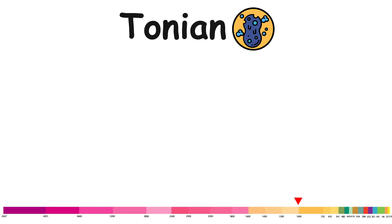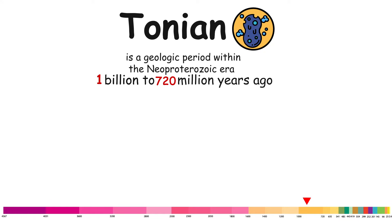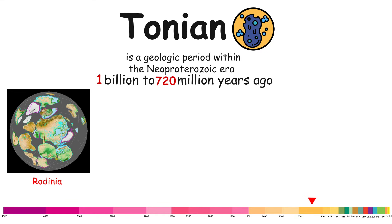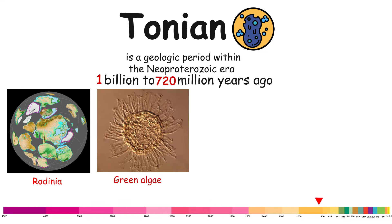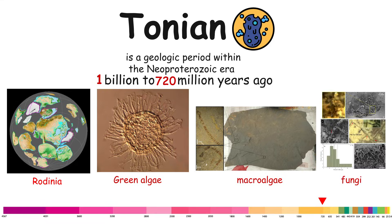Tonian. The Tonian is a geologic period within the Neoproterozoic era, spanning approximately from 1 billion to 720 million years ago. During this period, the supercontinent Rodinia began to break up. Also, we have evidence of green algae, macroalgae, and fungi.